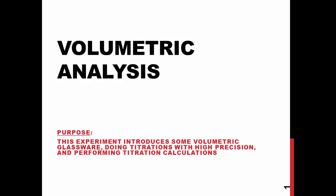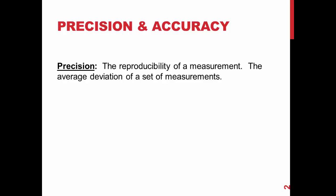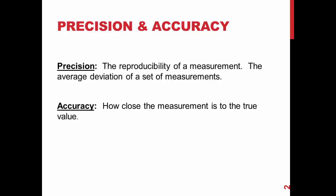Titrations are used to produce precise, accurate data and results. The definitions of precision and accuracy are as follows. Precision is the reproducibility of a measurement — it is also the average deviation of a set of measurements. Accuracy is how close the measurement is to the true value.